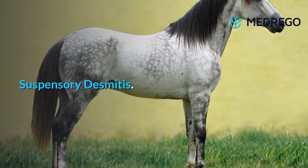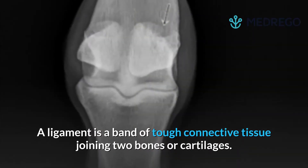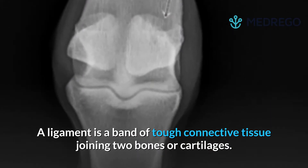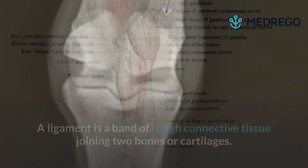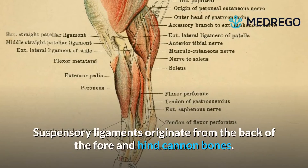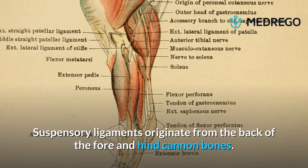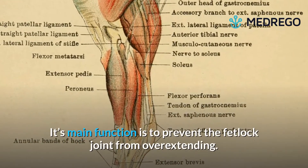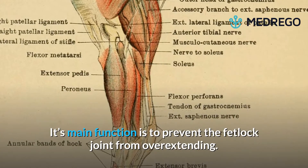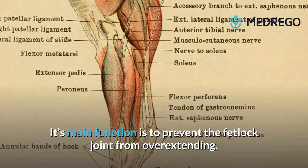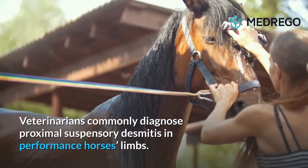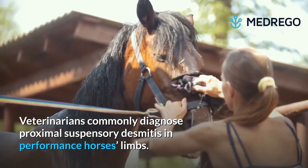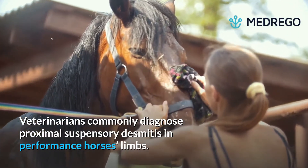Suspensory Desmitis. A ligament is a band of tough connective tissue joining two bones or cartilages. Suspensory ligaments originate from the back of the fore and hind cannon bones, and their main function is to prevent the fetlock joint from overextending. Veterinarians commonly diagnose proximal suspensory desmitis in performance horses' limbs.